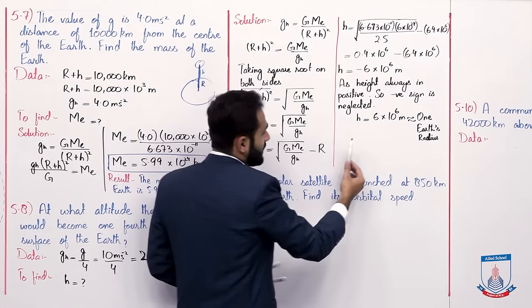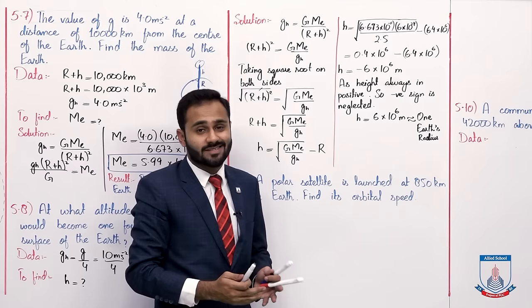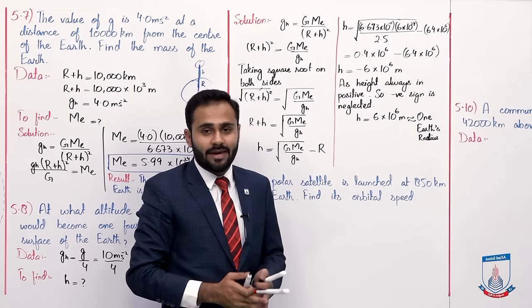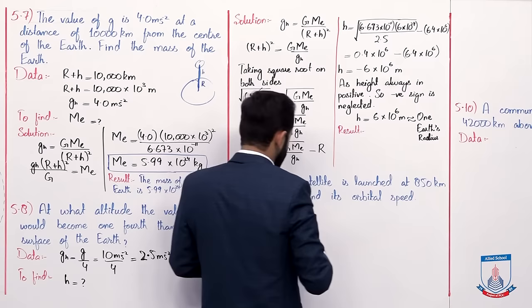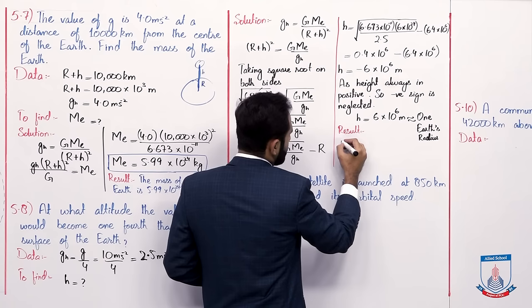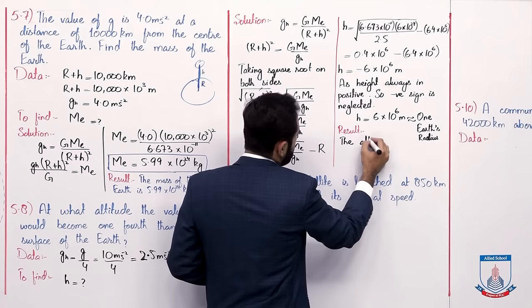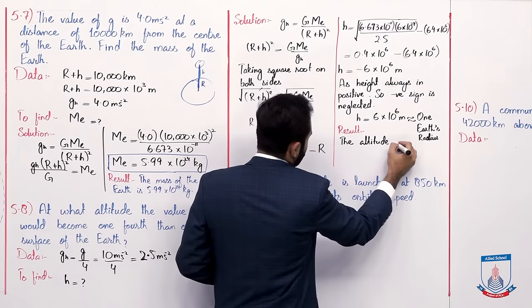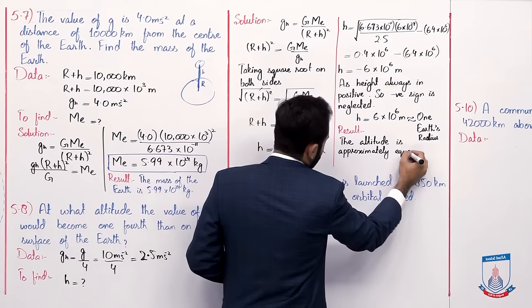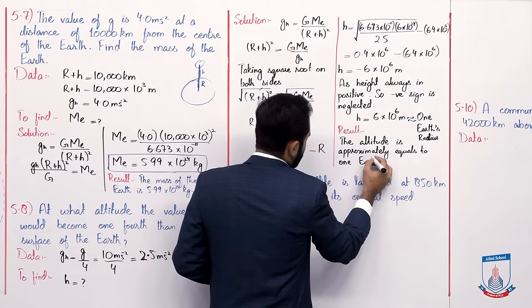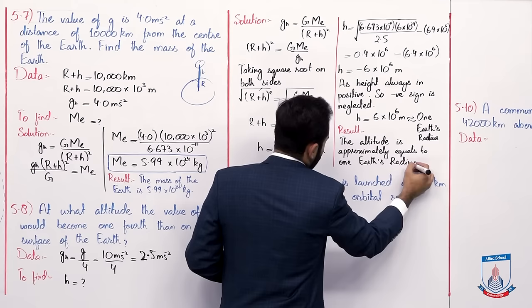Because if we consider the Earth's radius, it is 6.4 multiplied by 10 to the power 6, and similarly this height is approximately equivalent to one Earth radius. So the altitude is approximately equal to 1 Earth radius.